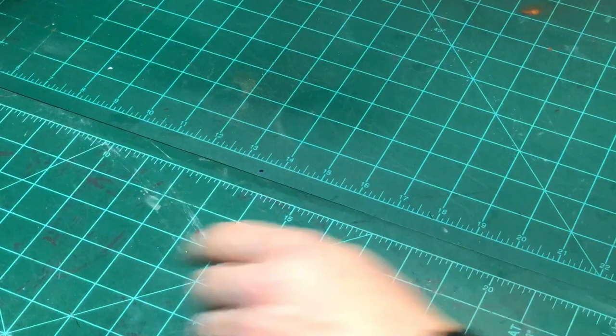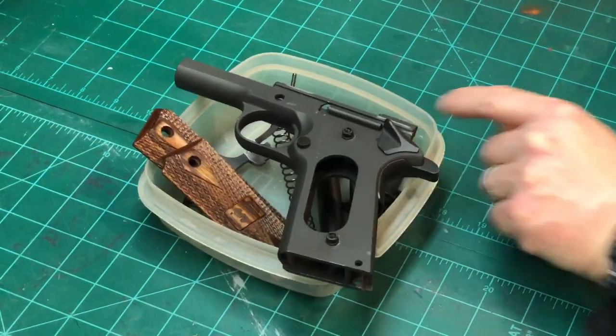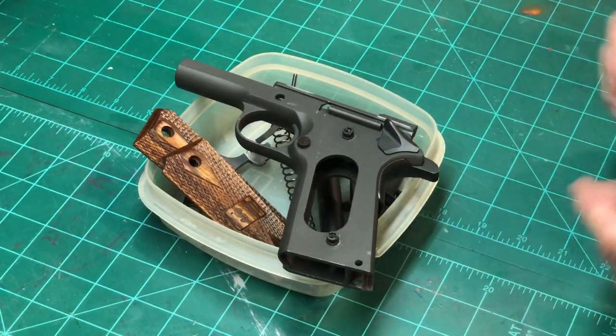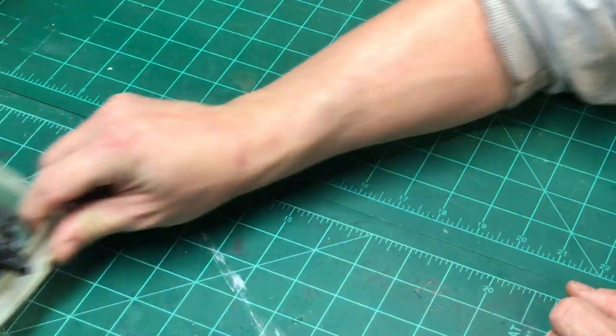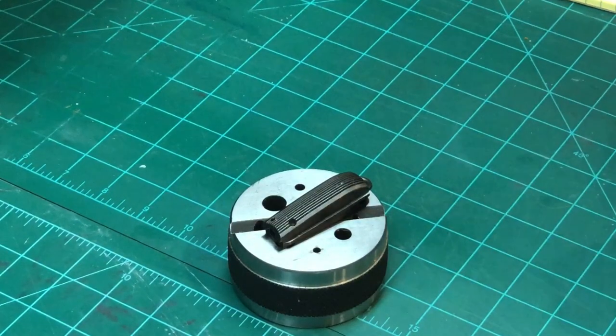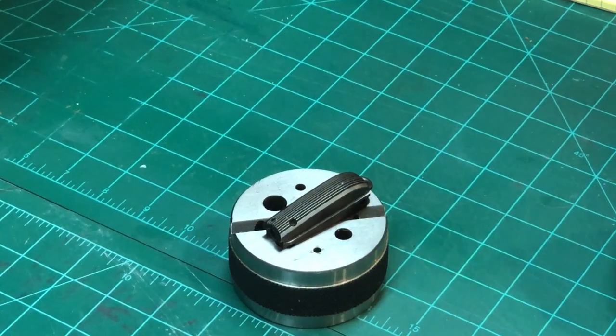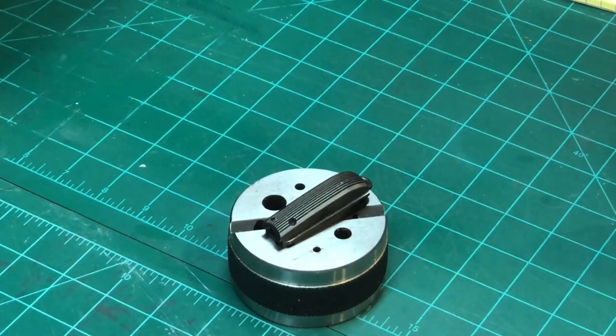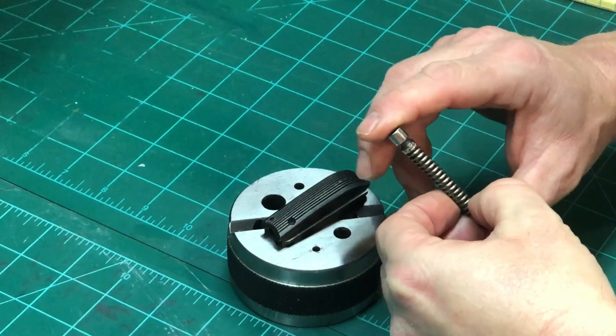And in case you were wondering, this is a 1911 in kit form. So without overstating the obvious, the primary mission of the mainspring housing is to actually house the mainspring, which is this guy right here.